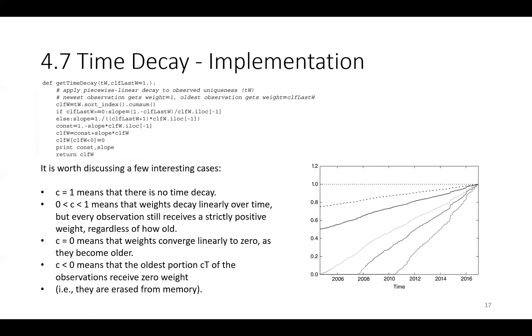We can implement the time decay using the following code. It is also worth discussing a couple of interesting cases the author mentions. In the case of c equal to 1, there will be no time decay, while when c is between 0 and 1, it means that the weights decay linearly over time. But every observation still receives a strictly positive weight, regardless of how old it is.